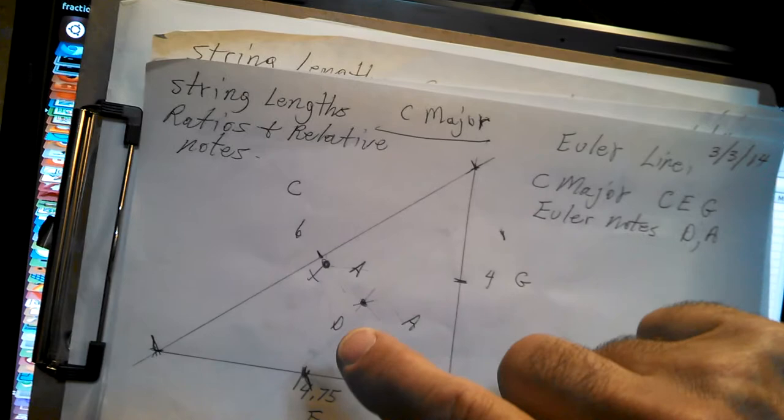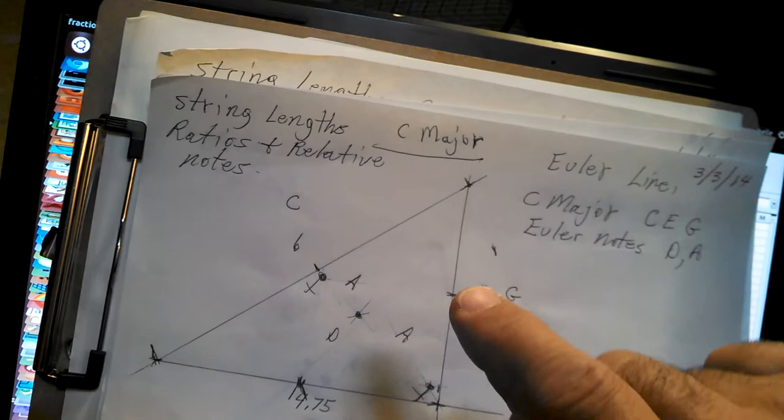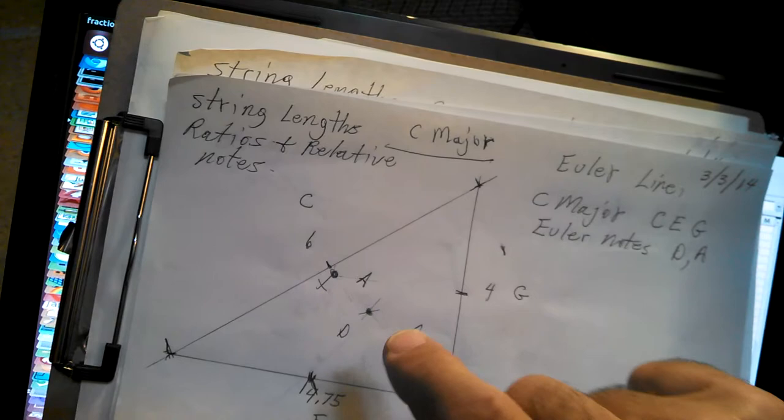Draw that to the vertex across from it. Same thing here, from this midpoint to the vertex over here, midpoint to the vertex over here. That creates this point right there.